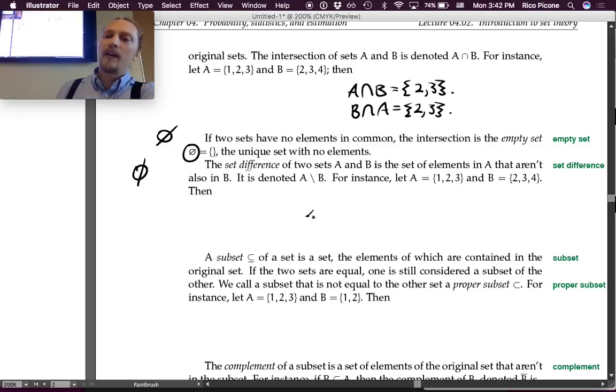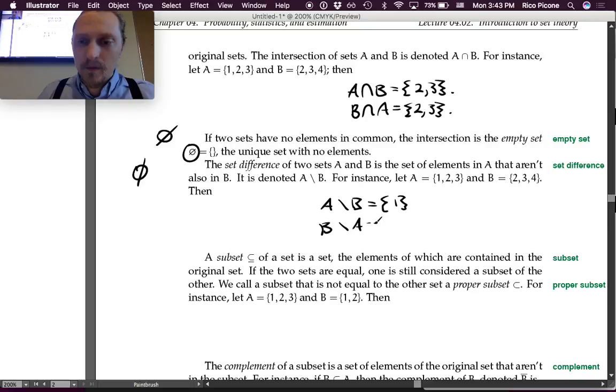The set difference of two sets A and B is the set of elements in A that aren't also in B. It's denoted with this slash, so A minus B. For instance, let A be the set {1, 2, 3} and B be the set {2, 3, 4}. Then A minus B equals what? 1. Because pretty much what you do is you start with the elements of A and you just take away anything that shows up in B. So 2 and 3 both show up in B, take them away.